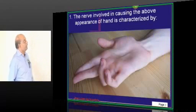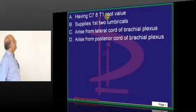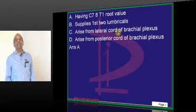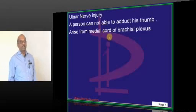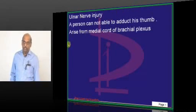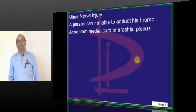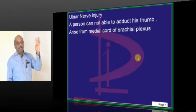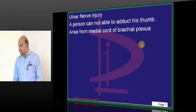The nerve causing the above appearance of the hand is the ulnar nerve. The ulnar nerve arises from the medial cord of the brachial plexus, and the root value is C8 and T1. In ulnar nerve injury, the person cannot adduct the thumb. Most thumb muscles are supplied by median and radial nerves, but adduction of the thumb is by the ulnar nerve — that is what needs to be remembered.